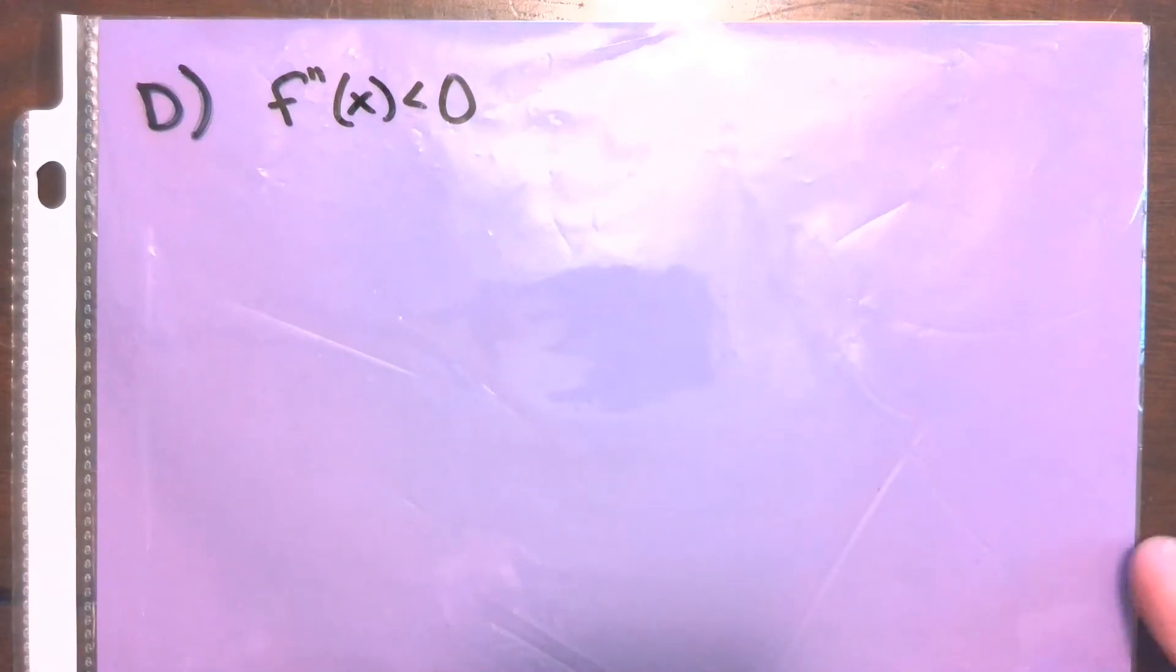Then part D is the most complicated of these four parts, but it's really not as complicated as it sounds. So they tell us in the beginning of part D that f prime of 5 is 3.